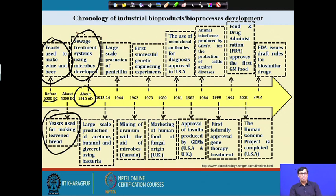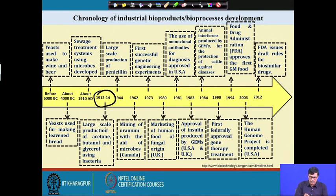The Central Pollution Control Board has observed that most chemical and biochemical industries pose environmental pollution problems in water streams, and more than 70 percent of wastewater treatment processes are controlled through biological means. This is because microorganisms can easily utilize soluble organic matter and convert it into carbon dioxide and insoluble cell mass, which can then be separated out easily. From 1912 to 1914, large-scale production of acetone, butanol, and glycerol using bacteria took place, and in 1962, mining of uranium with the aid of microbes was achieved.